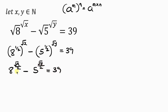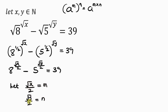Our next step is to let the square root of x over 2 be equal to m, and the square root of y over 2 be represented by n. So wherever I see square root of x over 2, I represent it with m, and square root of y over 2 with n. Substituting, this becomes 8 to the power of m, minus 5 to the power of n, equal to 39.